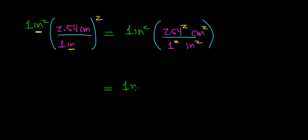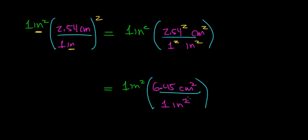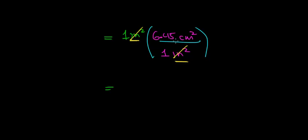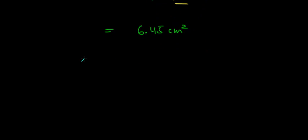Simplifying this expression: 1 inch squared times 2.54 squared — which works out to be about 6.45 — times centimeters squared, divided by 1 inch squared. The units of inches squared cancel out, leaving us with 1 times 6.45 centimeters squared, which equals 6.45 centimeters squared. So 1 inch squared is exactly equal to 6.45 centimeters squared. Notice that the unit of a square inch is much larger than the square centimeter — it takes 6.45 square centimeters to equal 1 square inch.